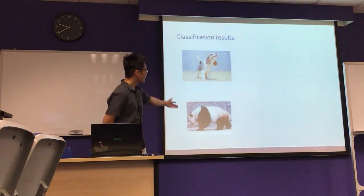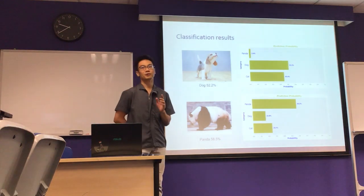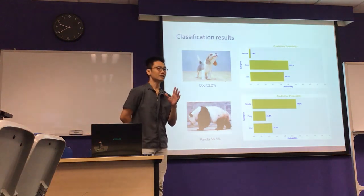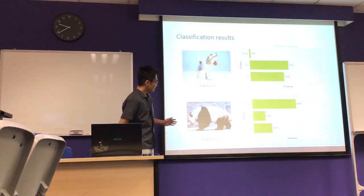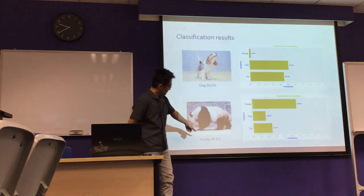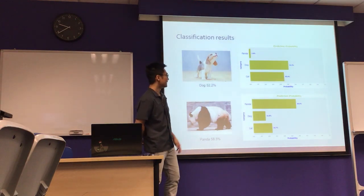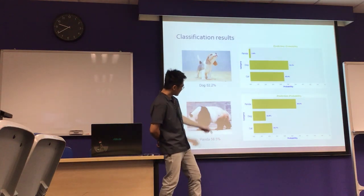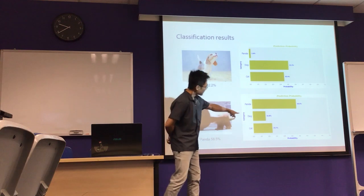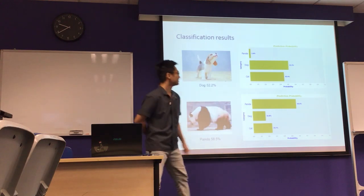I fed these images to the model and the simple neural network model is able to classify them correctly. For example, it is 58% sure that this is a panda. And because it has legs, there could be a small chance that it could be a dog or a cat as well.